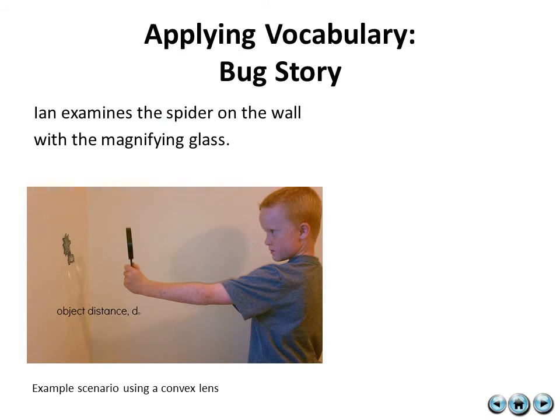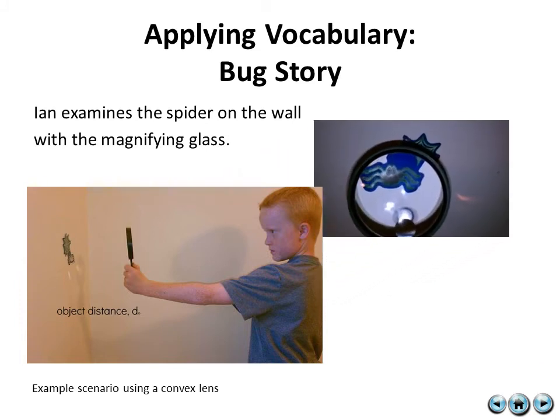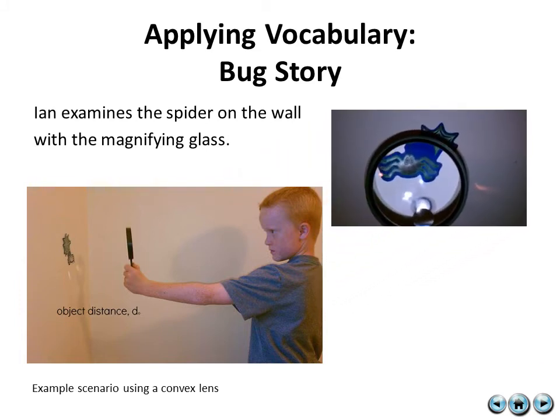So let's apply what we've learned so far to a bug story. In this little picture, Ian examines the spider on the wall with the magnifying glass. And what he sees is the image. The object distance for Ian is the distance from the spider to his magnifying lens, and that variable is represented with a D sub O.